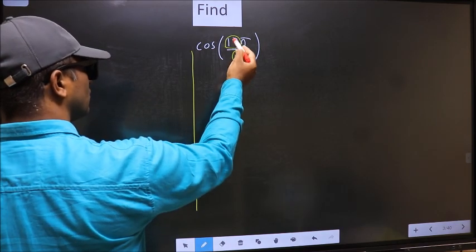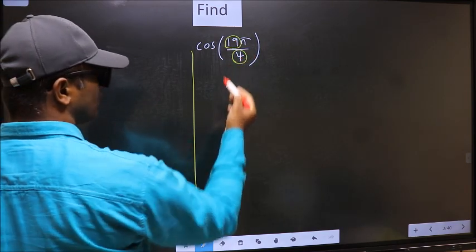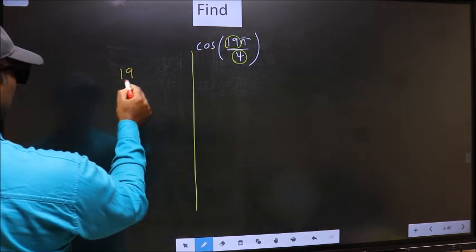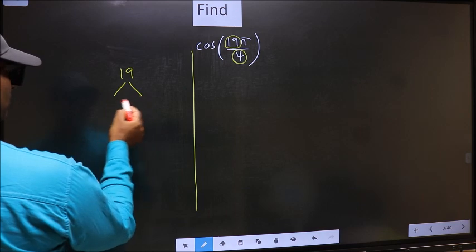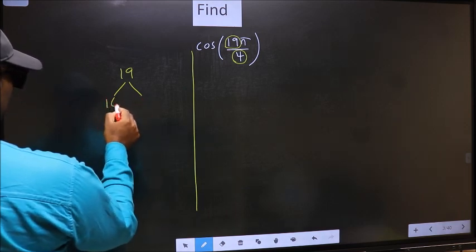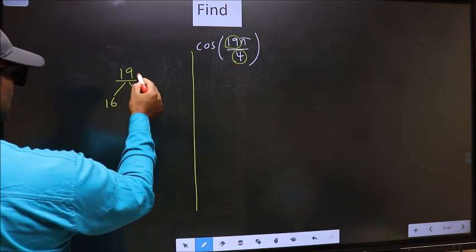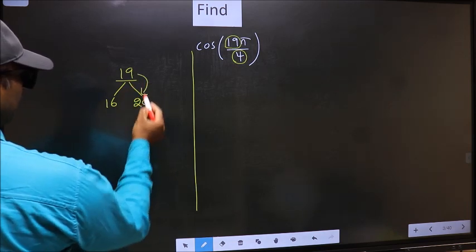19 is close to which multiple of 4? What I mean is, 19, and here you should write multiples of 4, that is 16, 20. So 19 is close to which number? This is close to 20.